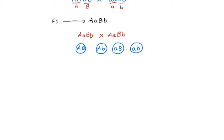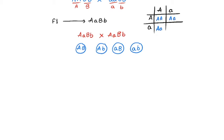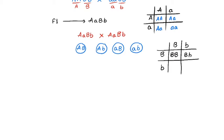We are not going to construct the 4x4 Punnett square. Instead, we're going to perform a monohybrid cross for both the A character and the B character in the F1 progeny. For A: cross capital A small a with capital A small a — you get capital A capital A, capital A small a, capital A small a, and small a small a. Similarly for B, you get capital B capital B, capital B small b, and small b small b.